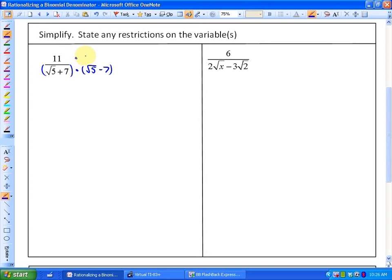You may kind of remember that looks kind of similar to a difference of squares. And you'll see why, in practice, that's useful. If we look at the numerator first, what you'll see is that 11 times root 5 and 11 times 7, our numerator is going to become 11 root 5 minus 77.